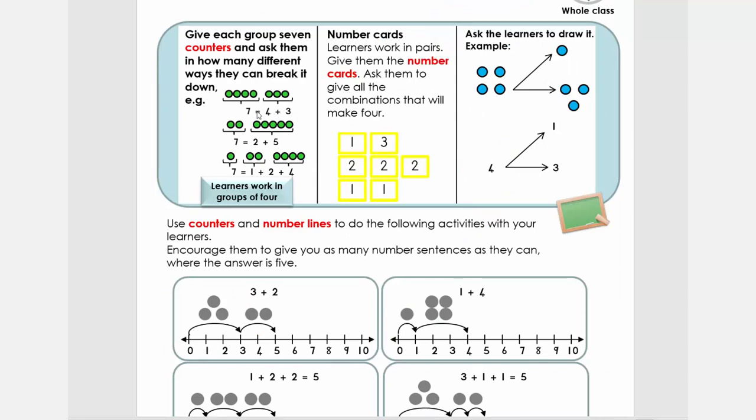Now we're going to introduce the lesson. First you're going to give the child seven counters. Now you're going to ask how many different ways or combinations can you make to give you an answer of seven. Here, for instance, I'm showing you 4 plus 3, we've got 2 plus 5, we've got 1 plus 2 plus 4. See how many different combinations you could make. Pause and do this activity.